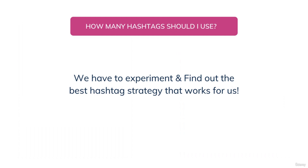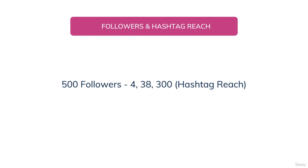Going back to the question of how many hashtags to use per post or Instagram reel, my answer is always the same: experiment and find it out. This is because hashtags work differently for different accounts. For some accounts, using 30 hashtags might be best; for others, three to five might work, just as Instagram has suggested. The best way to find out is to experiment. In the coming videos, we'll look at different ways to find the right set of hashtags for you. Personally, when I started out on Instagram with around 500 followers...